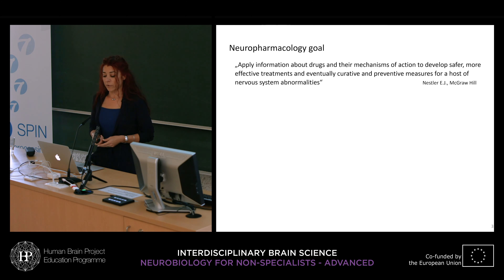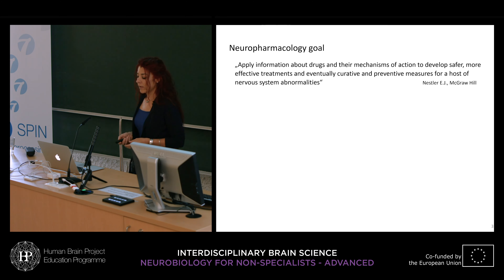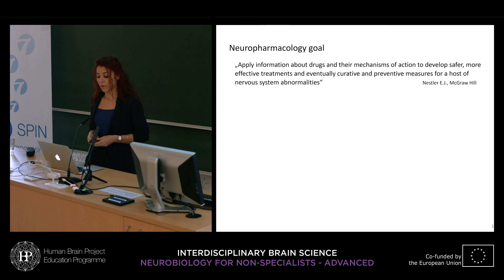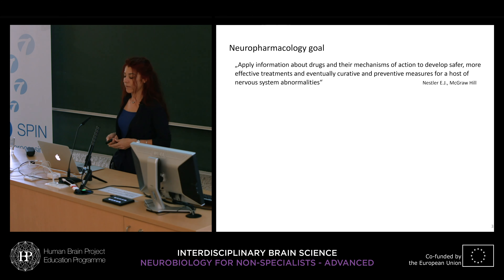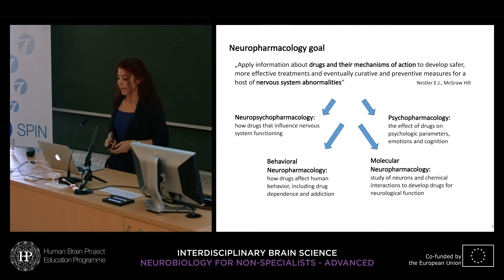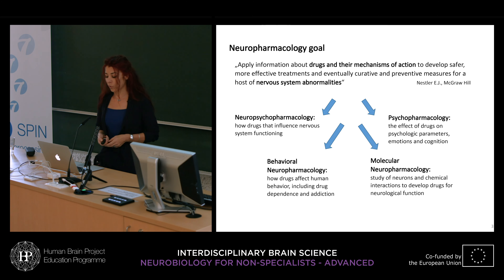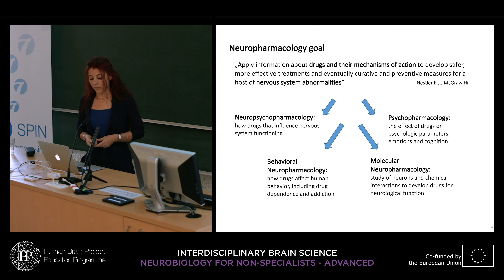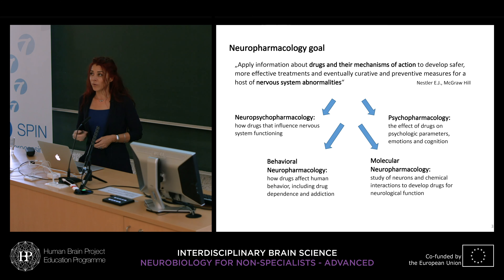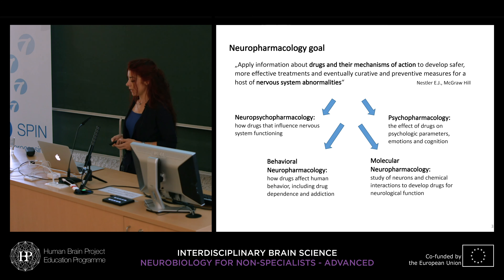The neuropharmacology goal is to apply information about drugs and their mechanisms of action to find more effective treatments for diseases affecting the nervous system. The classification of neuropharmacology includes several branches: neuropharmacology, psychopharmacology, behavioral neuropharmacology, and molecular neuropharmacology — all dealing with finding new drugs and how these drugs affect the human body.